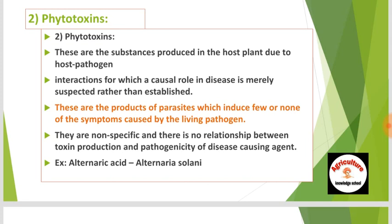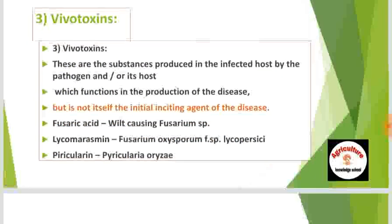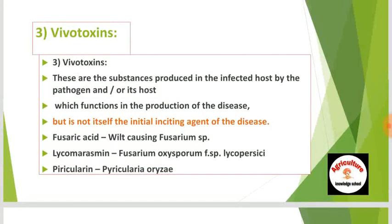An example of a phytotoxin is alternaric acid, caused by Alternaria solani. Vivotoxins are substances produced in the infected host by the pathogen and/or its host, which function in the production of disease but are not themselves the initial inciting agent of the disease. They cause disease with the help of other substances. An example of a vivotoxin is fusaric acid from wilt-causing Fusarium species.